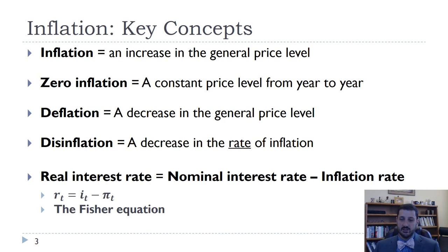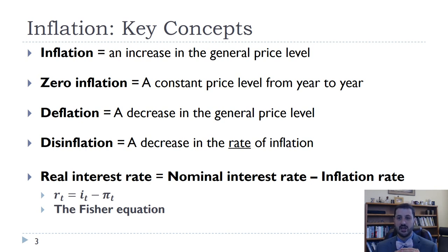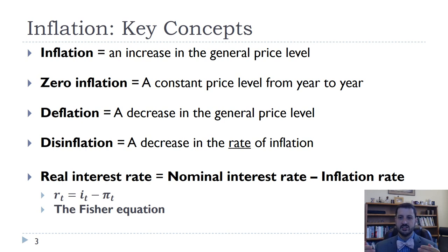Deflation means a decrease in the general price level — prices actually going down. We haven't experienced that very much in the United States since the end of World War II, though other economies like Japan have had many years of deflation since the 1990s. Disinflation, by contrast, is a decrease in the rate of inflation — inflation is still positive but going down, as in the 1980s. We can think of inflation as a car going forward, zero inflation as a stopped car, deflation as a car going backward, and disinflation as a car going forward but slowing down.